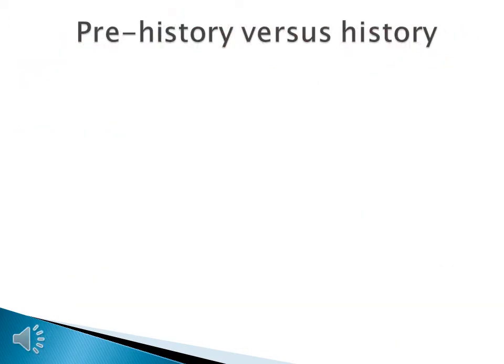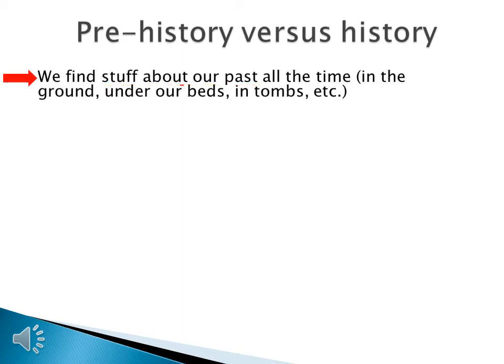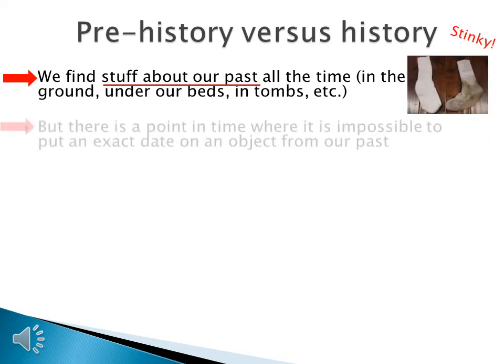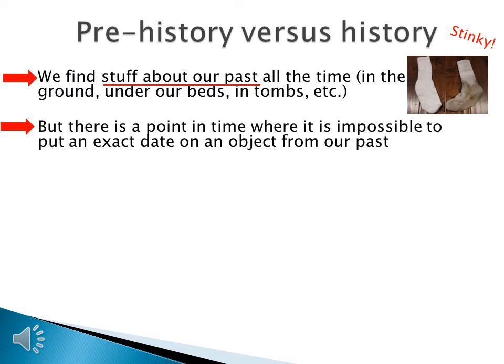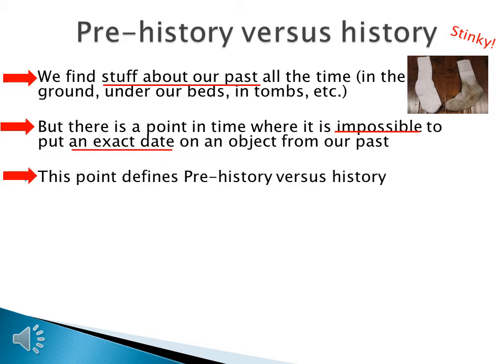So when can we be certain about a historical event versus when do we have to take an educated guess about what happened? It all depends on whether the event happened in prehistory or history. We find things about our past all the time — in the ground, in tombs — but there's a point in time where it becomes impossible to put an exact date on an object. That point defines the difference between prehistory and history.